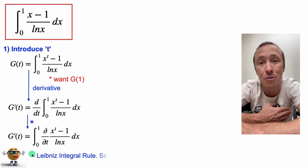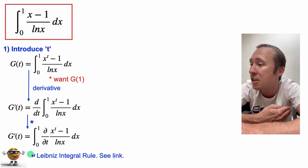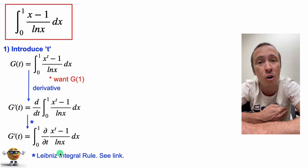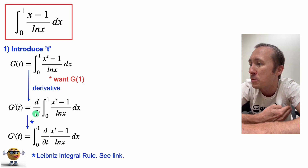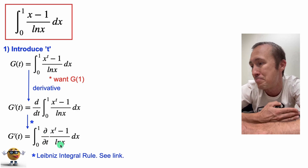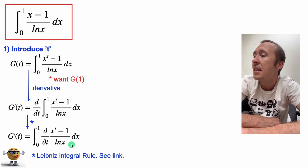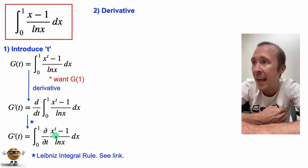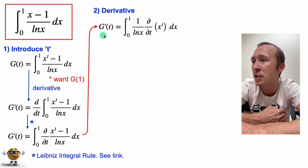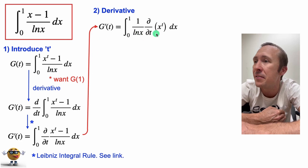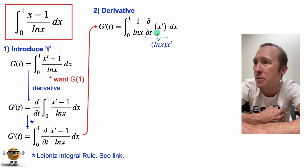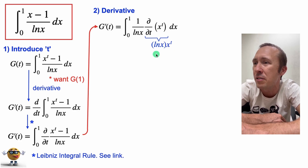It's called the Leibniz integral rule — pretty sweet. There are some conditions attached, so check those out, but the conditions are quite mild and for the most part you can bring the derivative inside for most functions. This becomes a partial derivative because it's now a function of x and t, but the derivative is not too bad. x comes out of the derivative — this is not the power rule because we're not taking the derivative with respect to x. It's with respect to t, so the derivative is ln x · x^t.